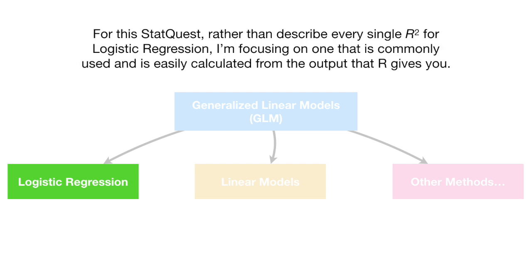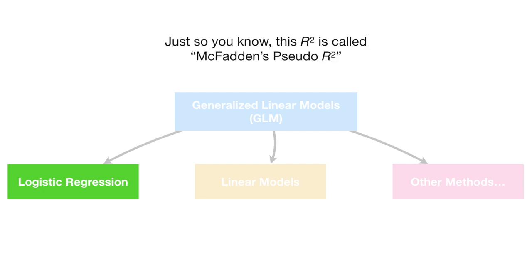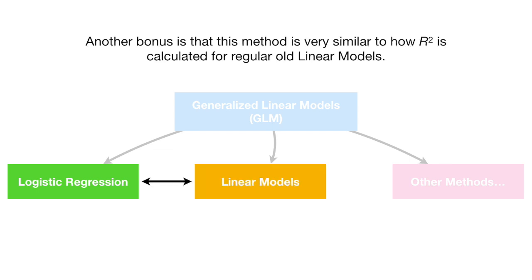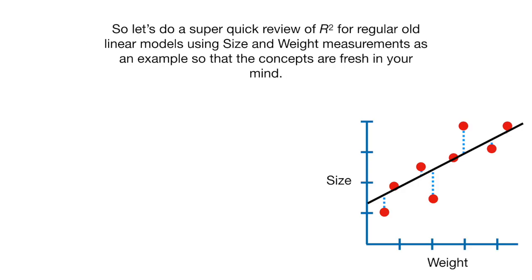For this StatQuest, rather than describe every single R squared for logistic regression, I'm focusing on one that is commonly used and is easily calculated from the output that R gives you. Just so you know, this R squared is called McFadden's pseudo R squared. Another bonus is that this method is very similar to how R squared is calculated for regular old linear models. So let's do a super quick review of R squared for regular old linear models using size and weight measurements as an example so that the concepts are fresh in your mind.